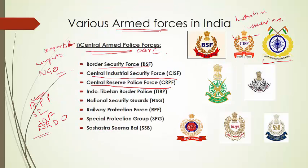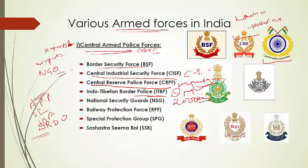Next is the Indo-Tibetan Border Police — ITBP — responsible for security along the Indo-Tibetan border covering approximately 2,000 kilometers. ITBP is mainly trained in mountaineering and disaster management, as they work in the difficult terrains of mountains where disasters like landslides, earthquakes and heavy snowfall occur. It mainly safeguards the Sino-Indian border, also known as the McMahon Line.